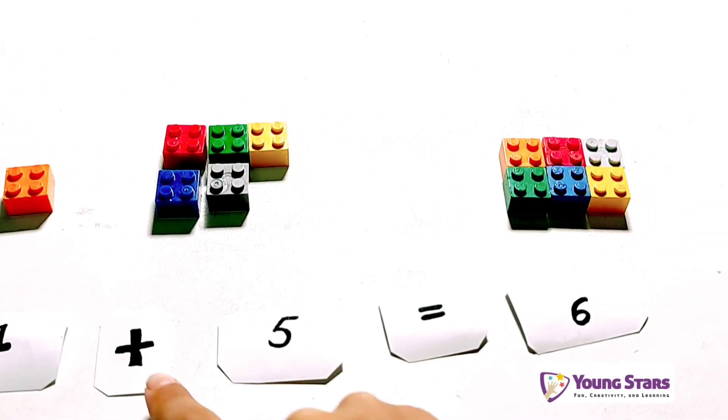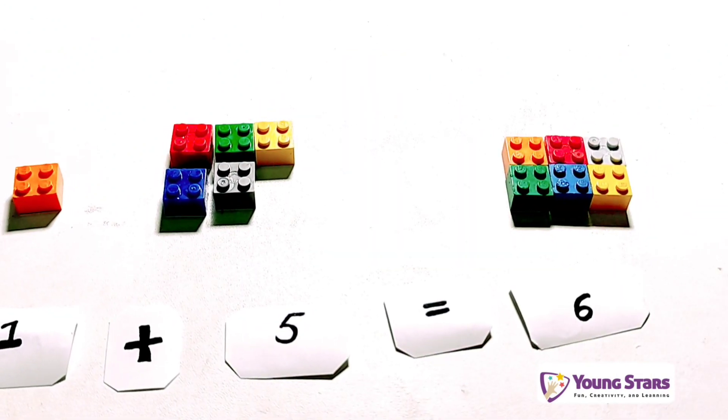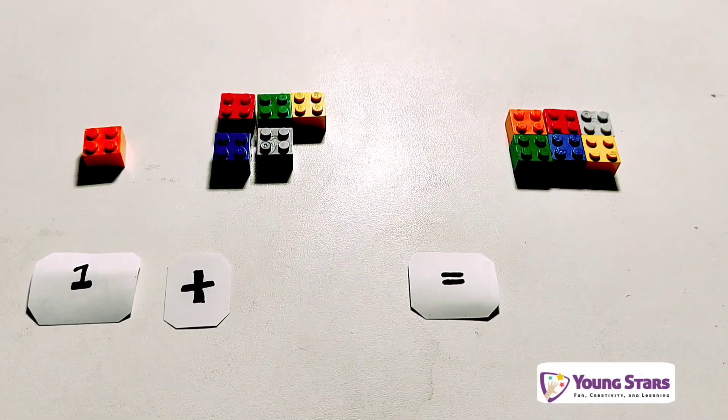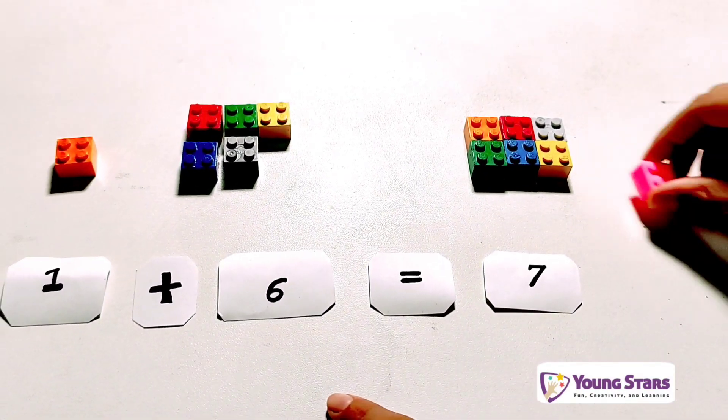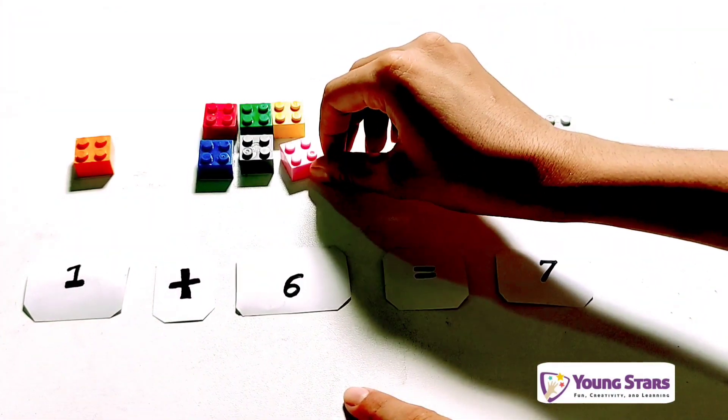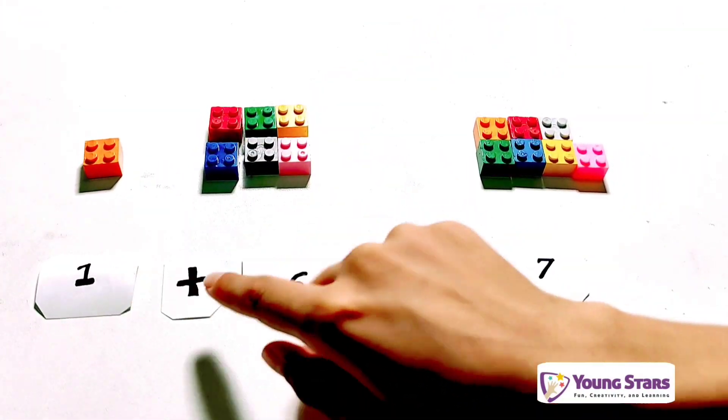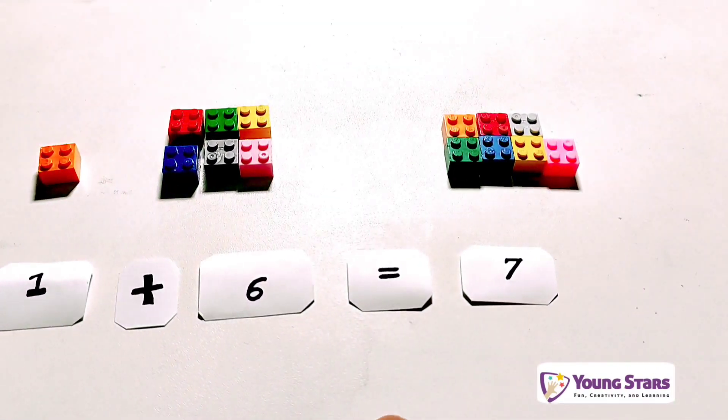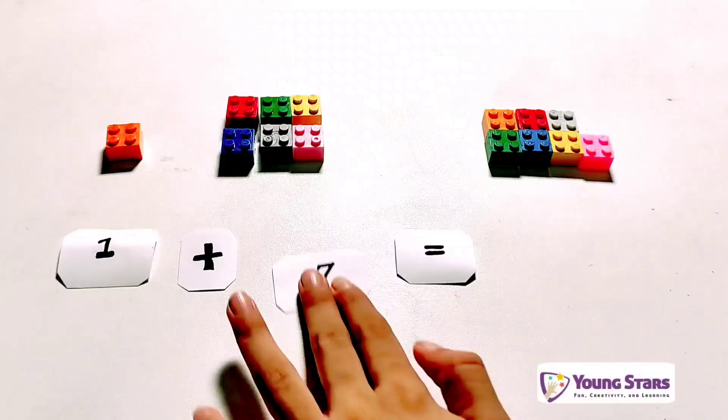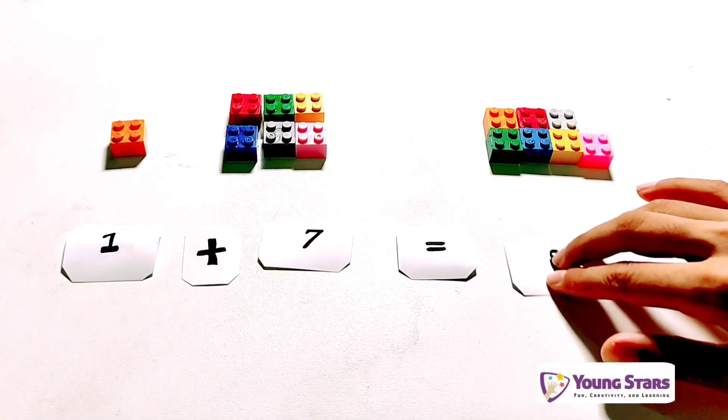One plus five equals six. One plus six equals seven. One plus six equals seven. One plus seven equals eight.